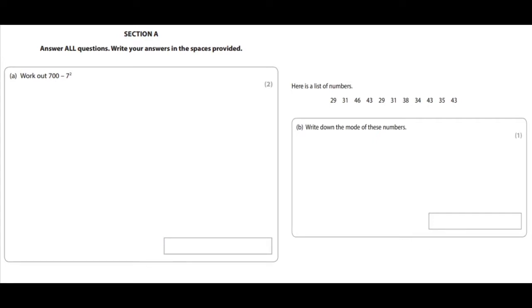So this is quite a nice easy one. It's a two-pointer so you've got to show your working out. Don't just put the answer. And the B section is just to show that you know how to find the mode average, and if you've watched one of my previous videos you'll know that the mode is the most. So the mode is the number that appears the most.